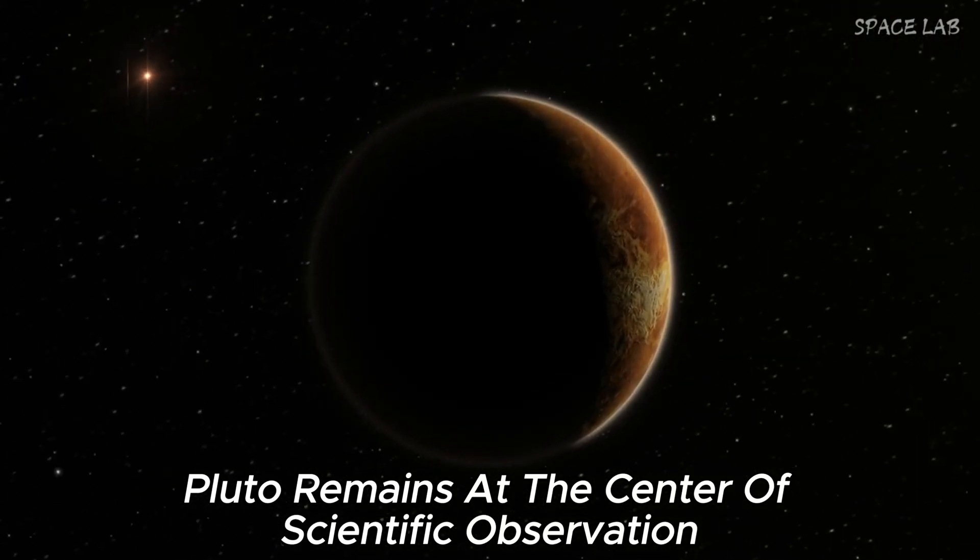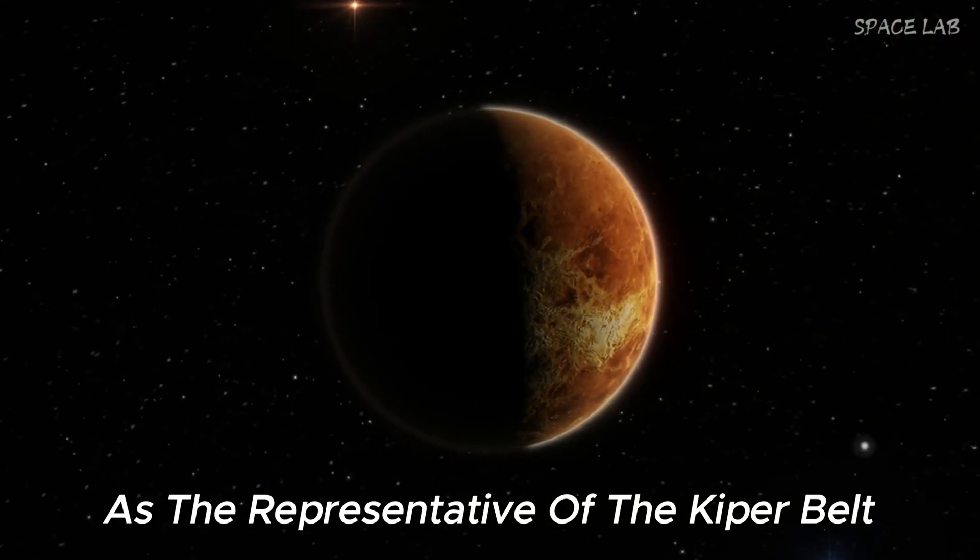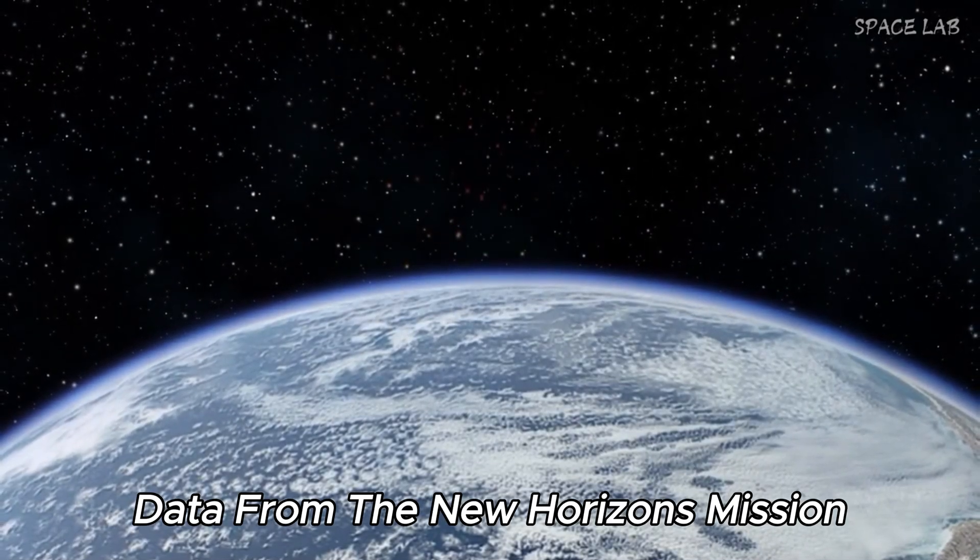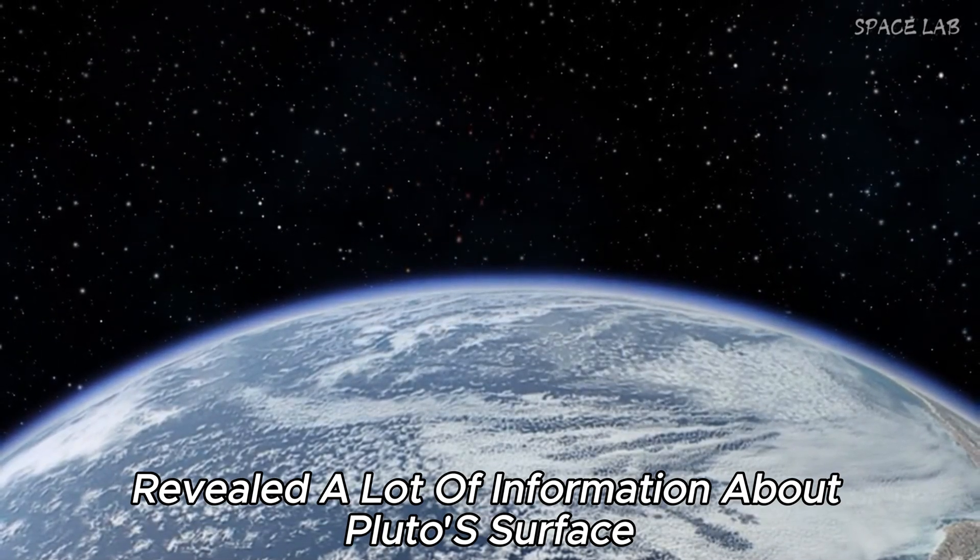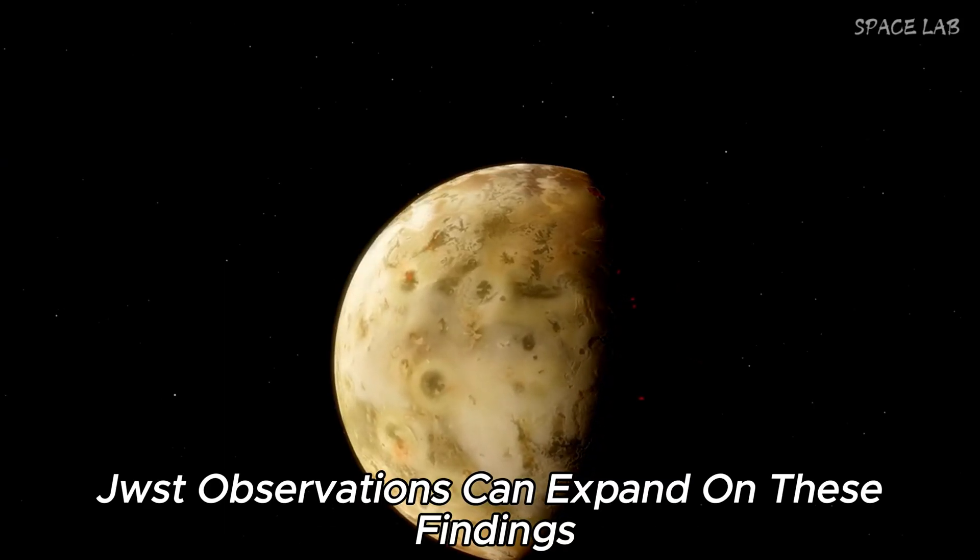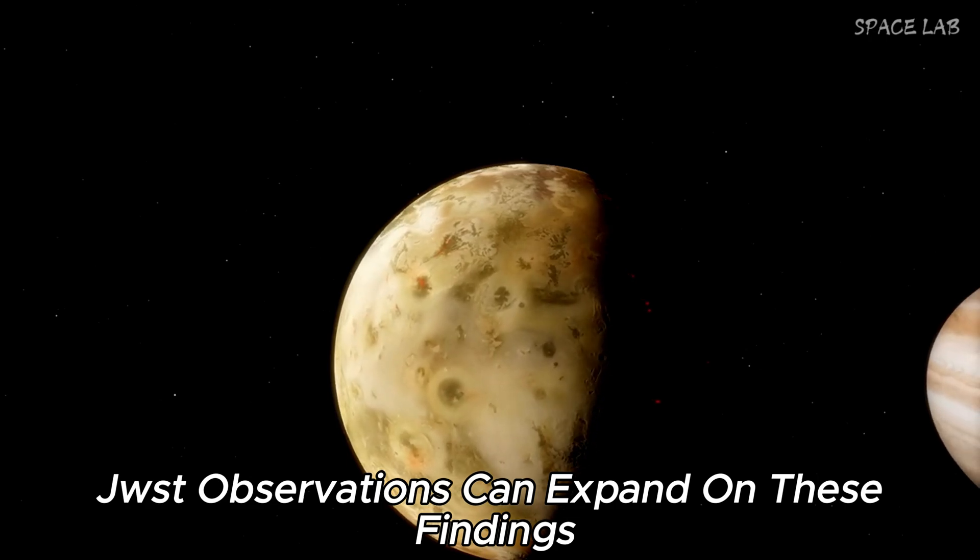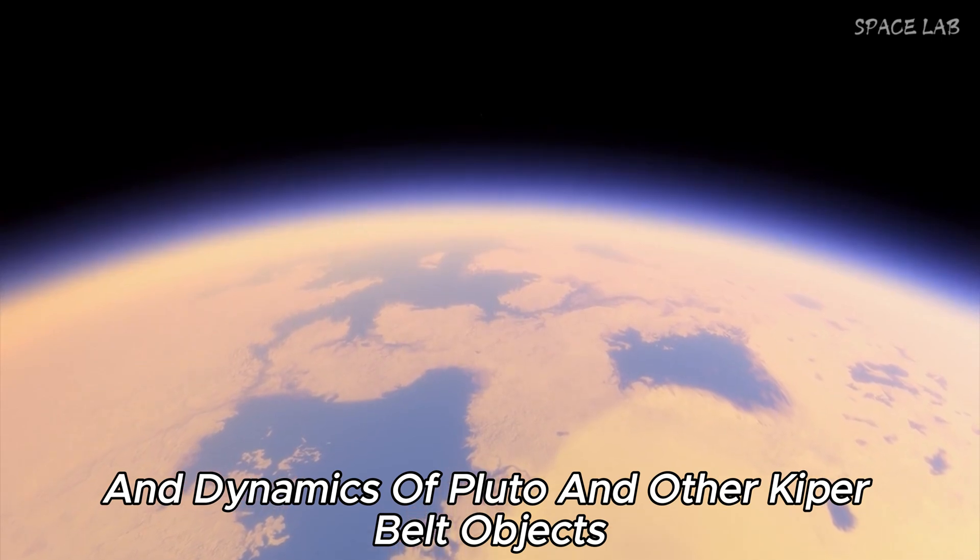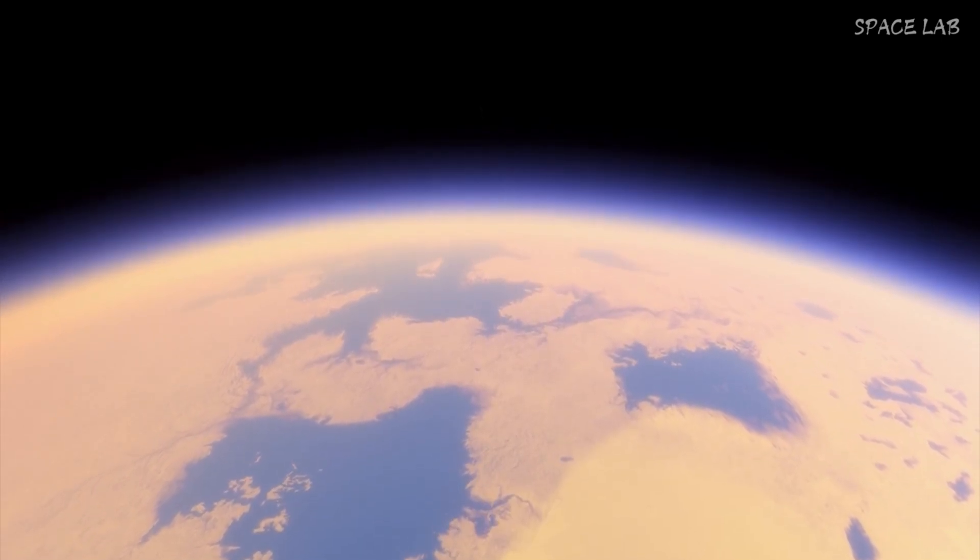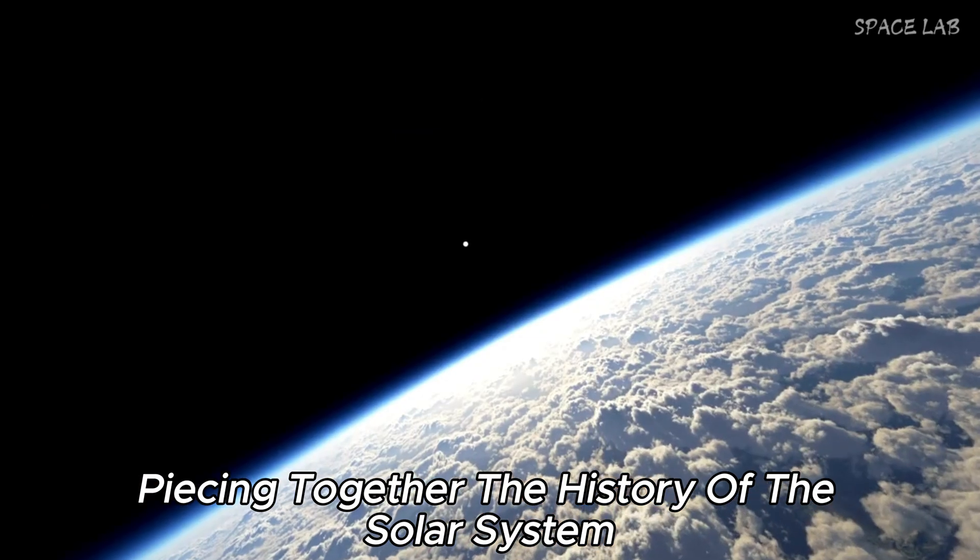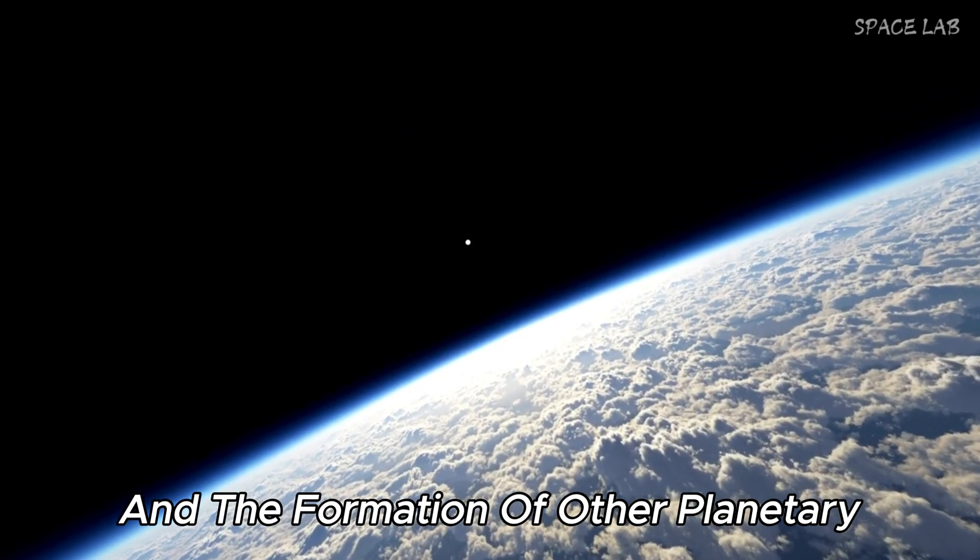Pluto remains at the center of scientific observation as the representative of the Kuiper Belt. Data from the New Horizons mission revealed a lot of information about Pluto's surface and subsurface conditions. JWST observations can expand on these findings by providing additional data on the composition and dynamics of Pluto and other Kuiper Belt objects. Understanding these distant worlds is important in piecing together the history of the solar system and the formation of other planetary systems in the galaxy.